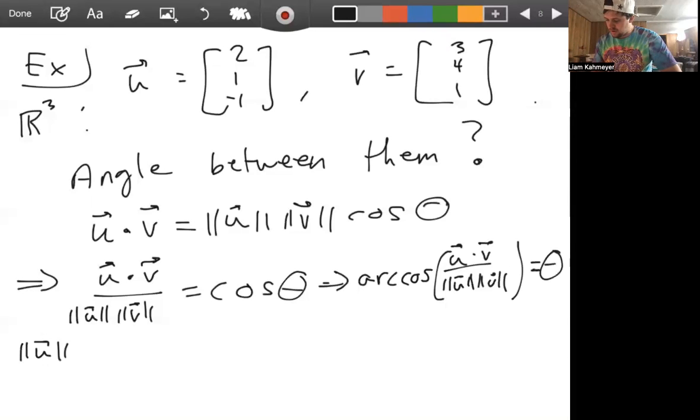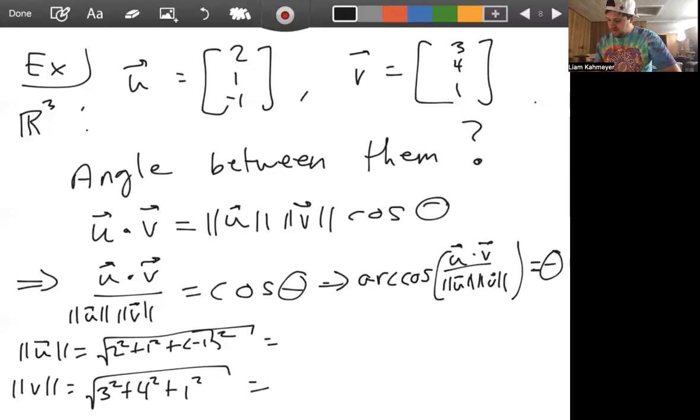Magnitude of U isn't too bad. It's going to be square root of 2 squared plus 1 squared plus negative 1 squared. Magnitude of V is going to be root of 3 squared plus 4 squared plus 1 squared. So to simplify, magnitude of U looks like it's going to be root 6, magnitude of V looks like it's going to be root 26.